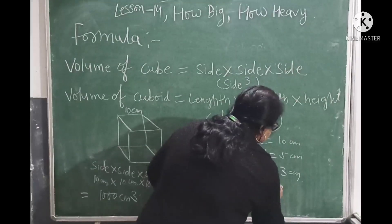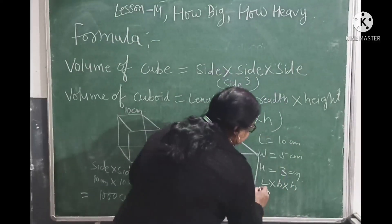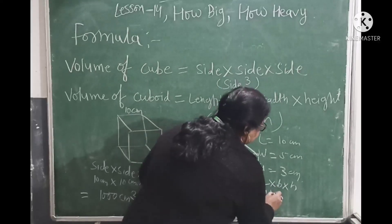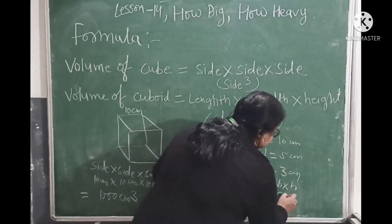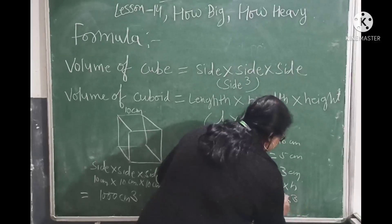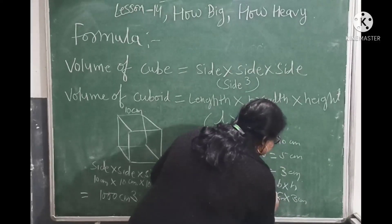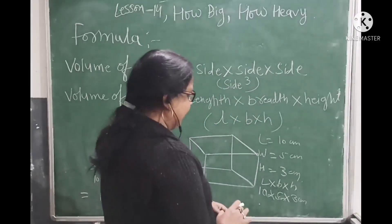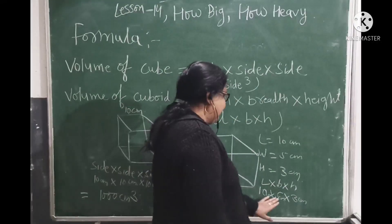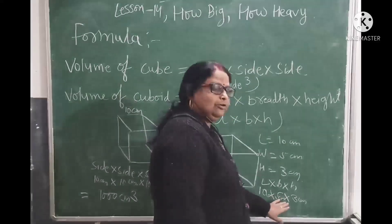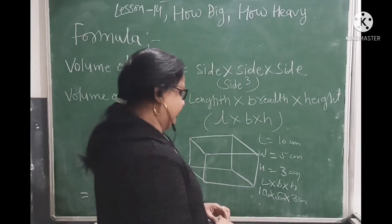The formula is length into breadth into height. We give length 10 cm, breadth 5 cm, and height 3 cm. We multiply: 10 into 5 is 50, and 50 into 3 is 150.